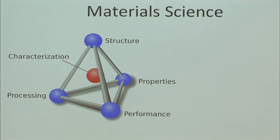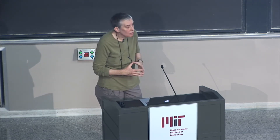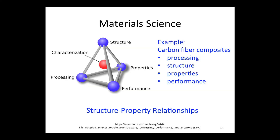We look at how properties are used in the performance of a material in engineering applications. The tetrahedron shows the interrelationship between processing, structure, properties, performance, and characterization. For example, if you think of carbon fiber composites, you could process them with unidirectional aligned fibers or with chopped random fibers — those two materials would have different structures, different properties based on that structure, and would perform differently in engineering applications. So it's really this processing, structure, properties, and performance — and as Jeff said, society.